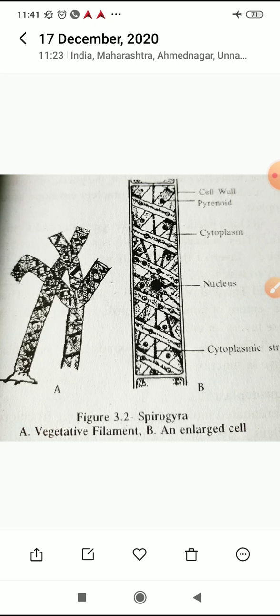Spirogyra genus includes about 300 species. It is universal in distribution and is relatively rare in tropical regions of the world.